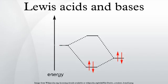For example, in the reaction of Me3B and NH3 to give Me3BNH3, Me3B acts as a Lewis acid, and NH3 acts as a Lewis base. Me3BNH3 is the Lewis adduct. The terminology refers to the contributions of Gilbert N. Lewis.